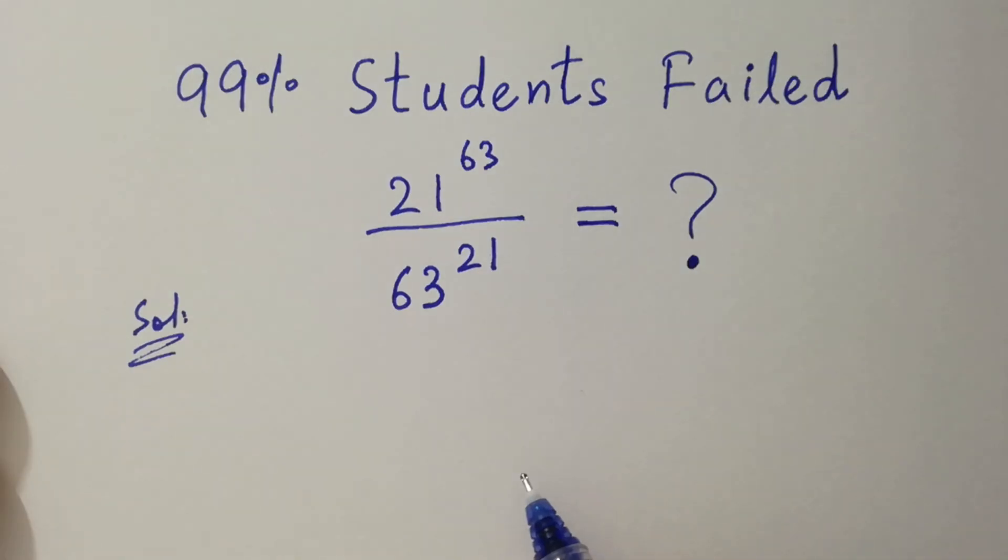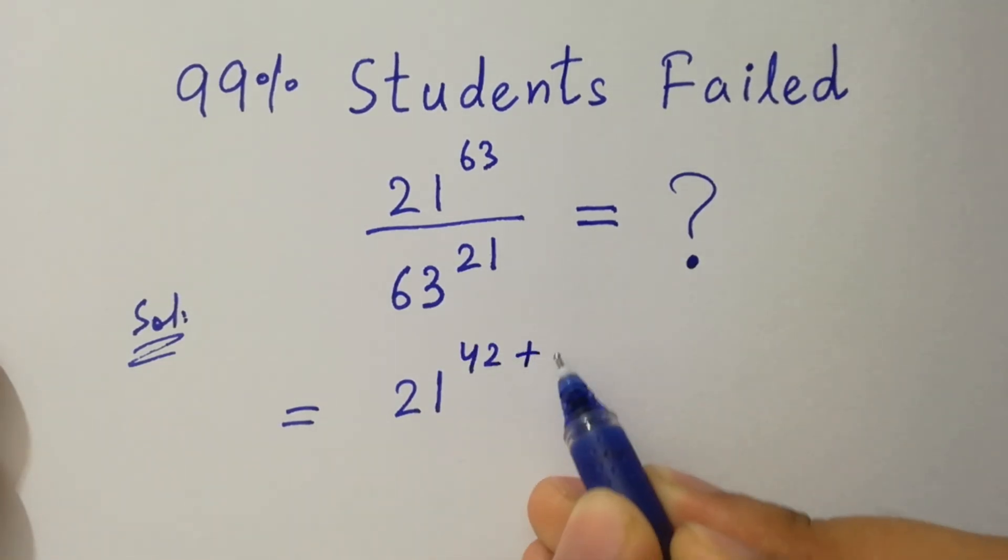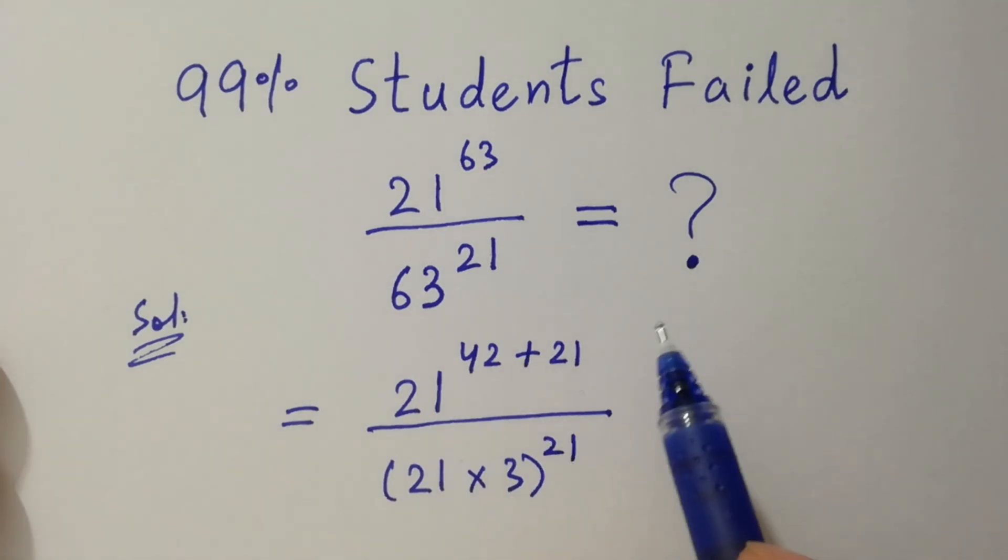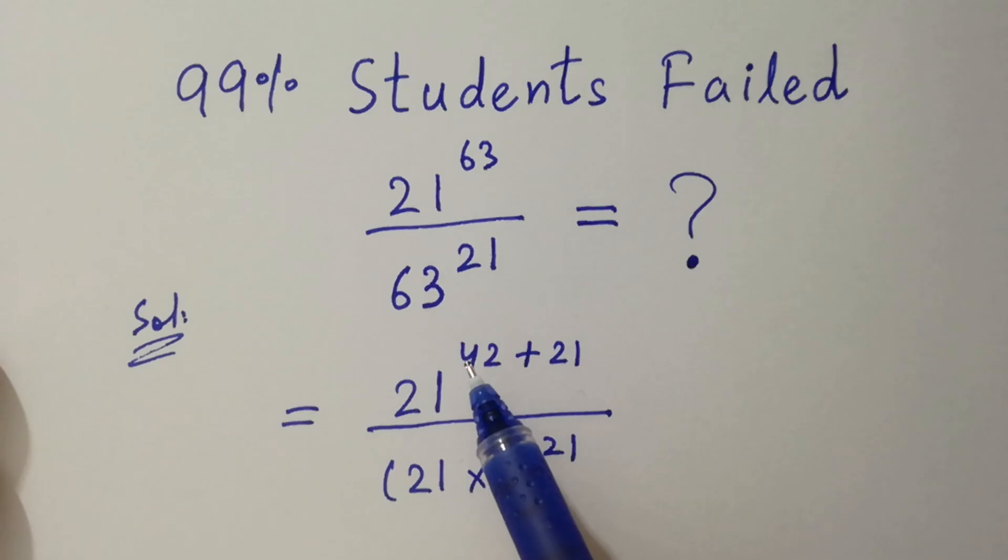This problem is the same as 21 to the power 42 plus 21 over 21 times 3 to the whole power 21, since 42 plus 21 is 63 and 21 times 3 is also 63.